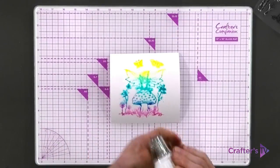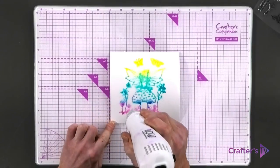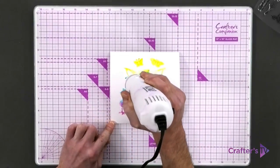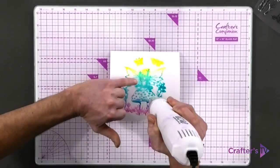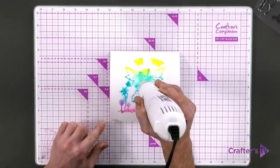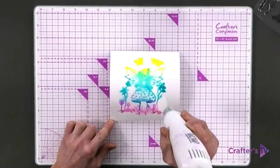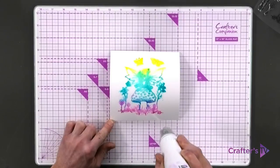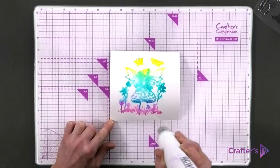Taking your heat tool, we're just going to start drying this off. We're going to get the majority of that ink dried off as well as the water, and see how it starts to bleed and push and pull. Don't worry about that, let it go naturally - it all adds to the effect.